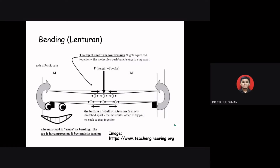For bending, a turning force or moment equals force times distance (M = F × d). When a moment or turning force is applied to a structural member fixed on both ends — such as a bookshelf — the moment that causes bending is called a bending moment. The bending produces both tension and compression inside a beam or pole, causing it to curve like a smile shape.